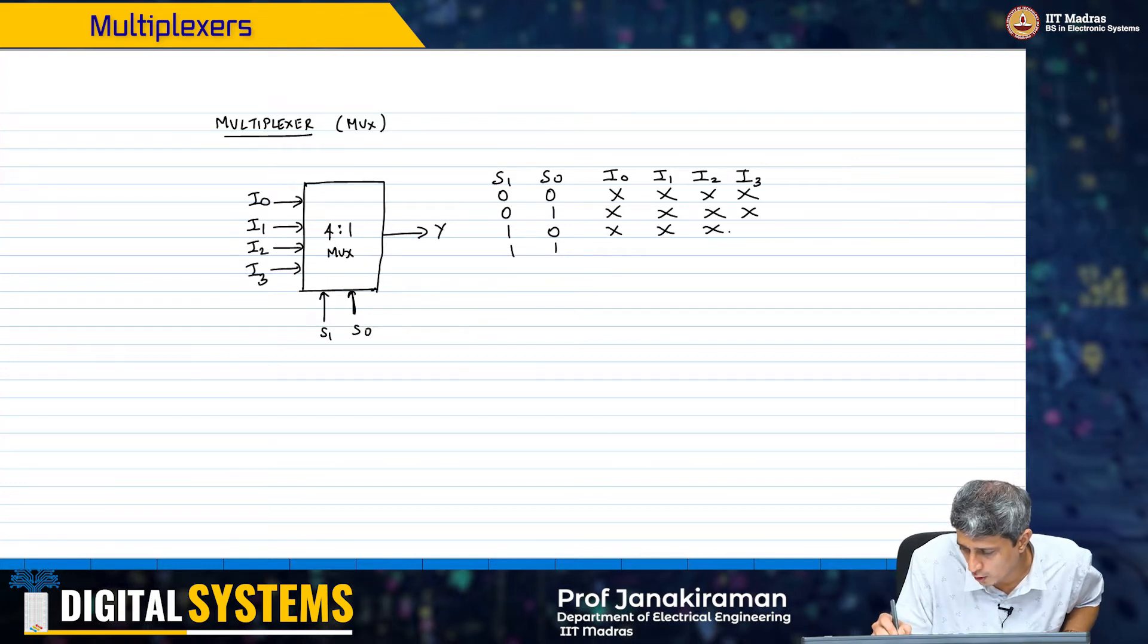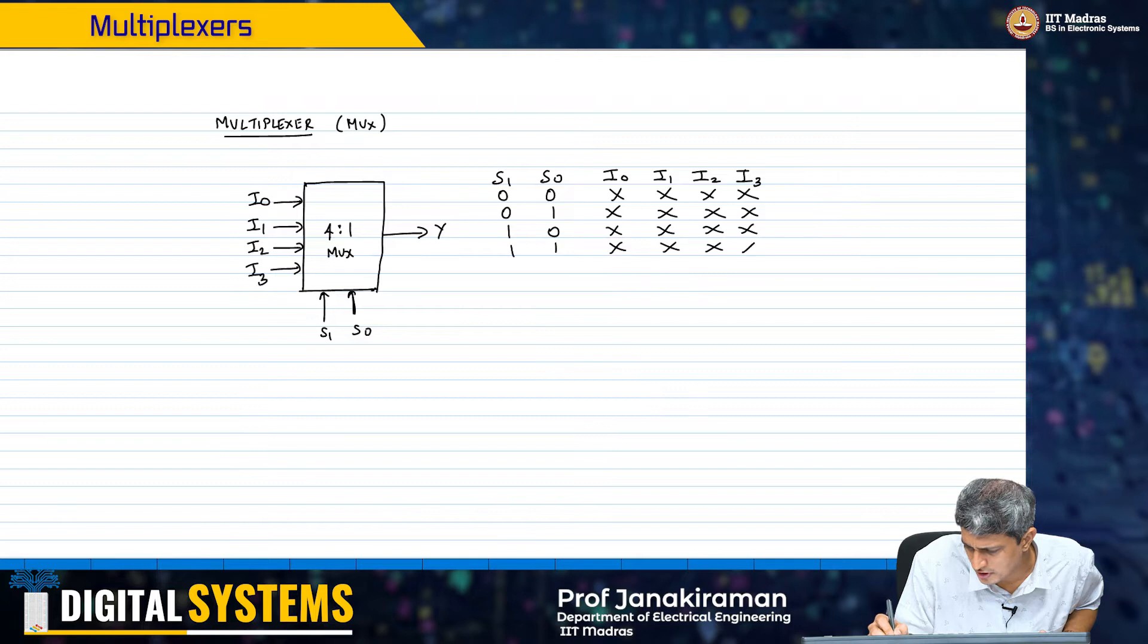If I wanted to write this truth table out fully I would have to write 64 combinations which is just too complex. So, I am not going to write all this. I will represent this truth table slightly differently.